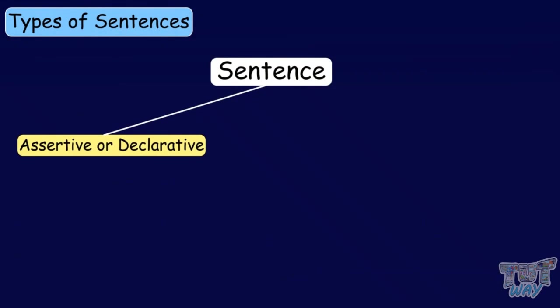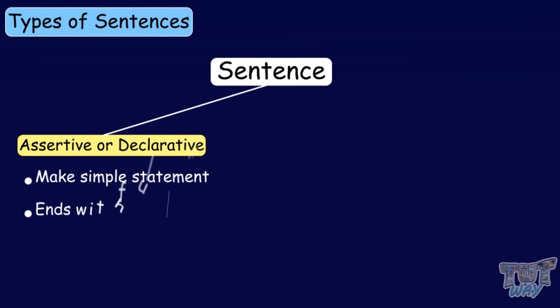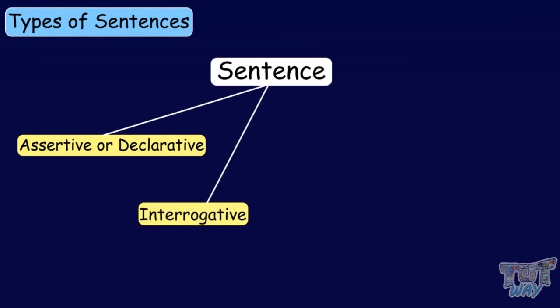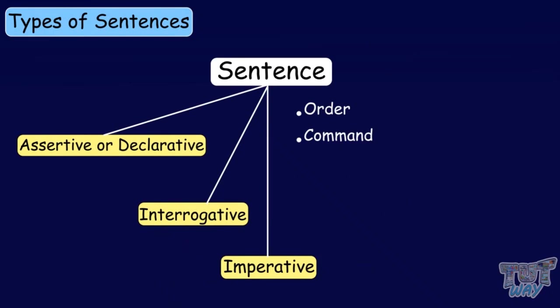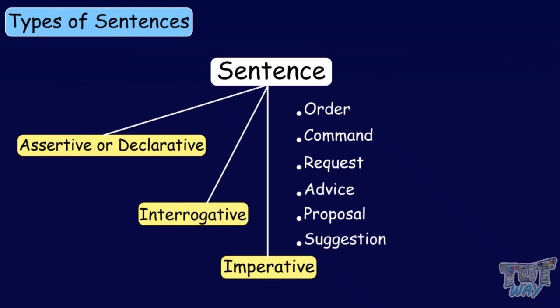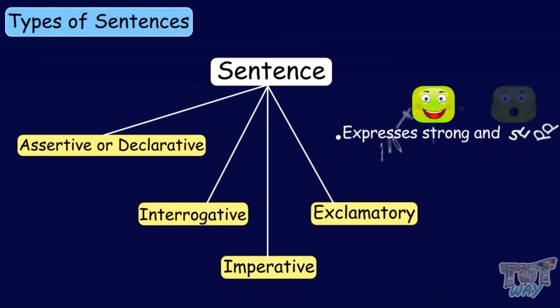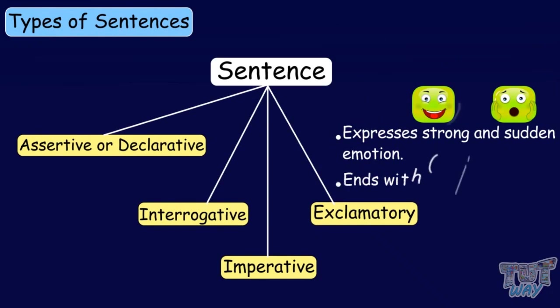So friends, today we learnt about different types of sentences. A sentence can be an assertive or declarative sentence — it makes simple statements and ends with a full stop. A sentence can be interrogative — it asks something and ends with a question mark. If a sentence expresses an order, command, request, advice, proposal, or suggestion, it's called an imperative sentence and ends with a full stop. And if a sentence expresses a very strong and sudden emotion, it's called an exclamatory sentence and ends with an exclamation mark.